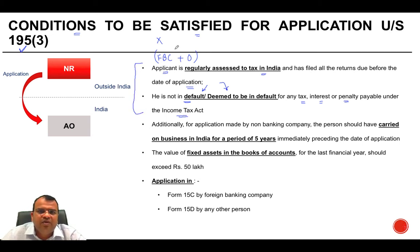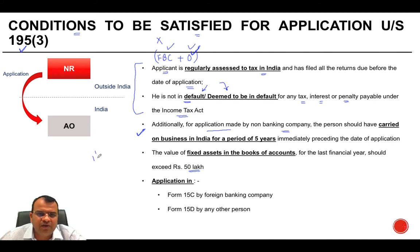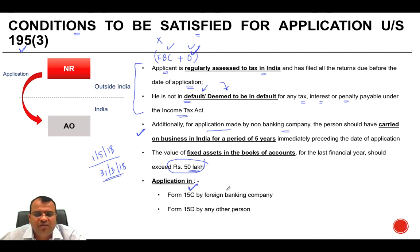These two conditions apply to both foreign banking companies and other businesses. Additionally, for applications made by a non-banking company, the person must have carried on business in India for at least five years immediately preceding the date of application, and the value of fixed assets in the books of accounts for the last financial year must exceed Rs. 50 lakh. The application must be made in Form 15C by a foreign banking company and in Form 15D by any other person.